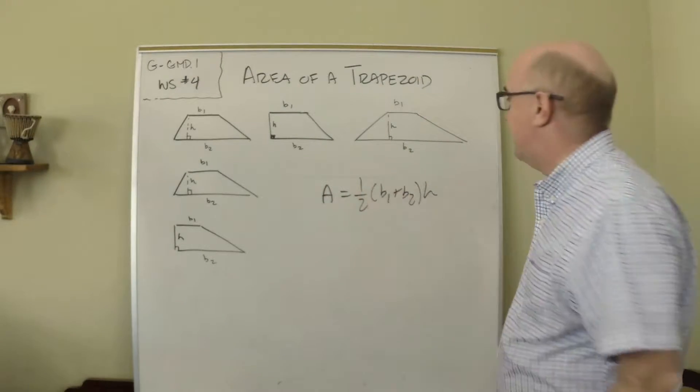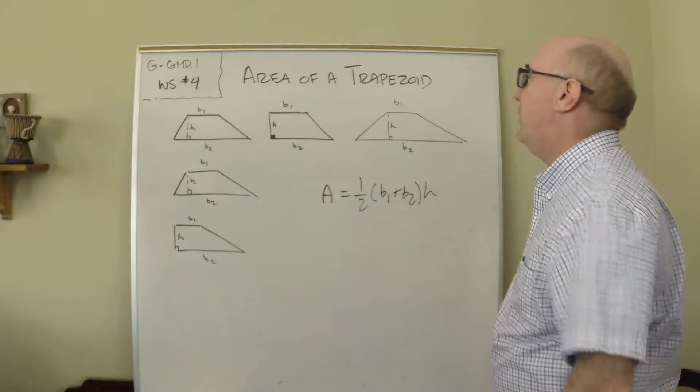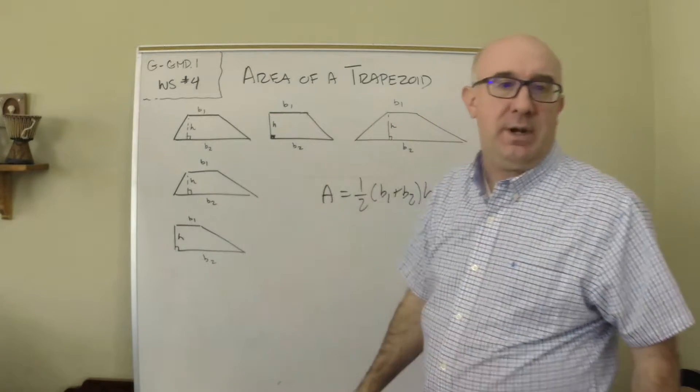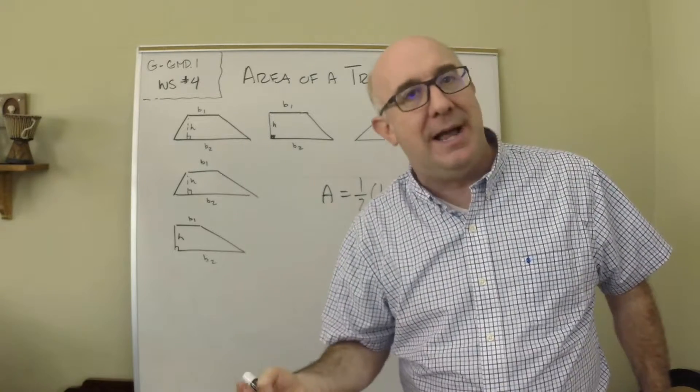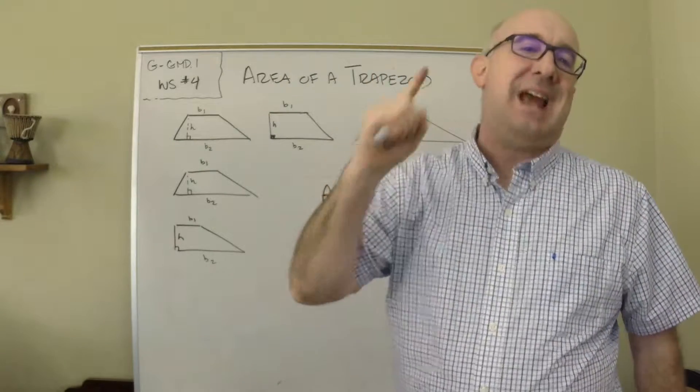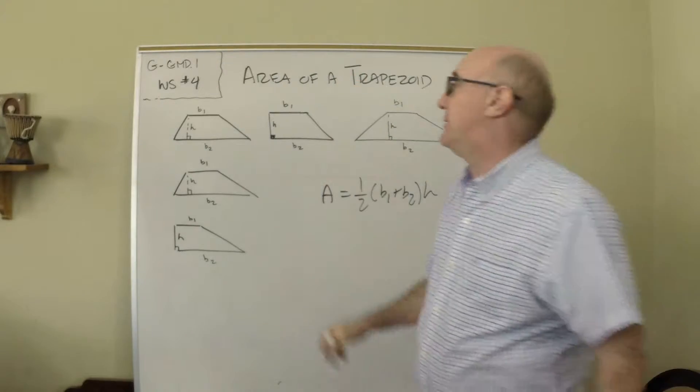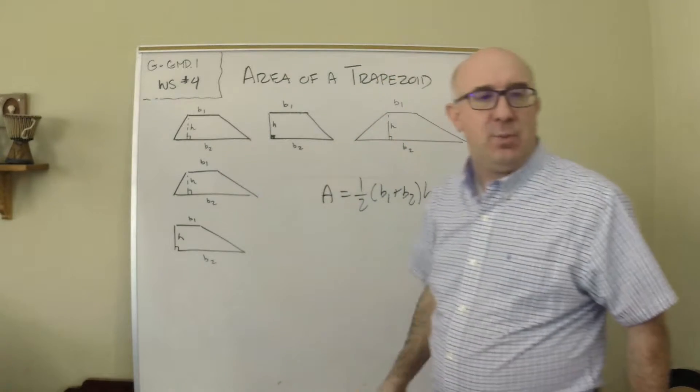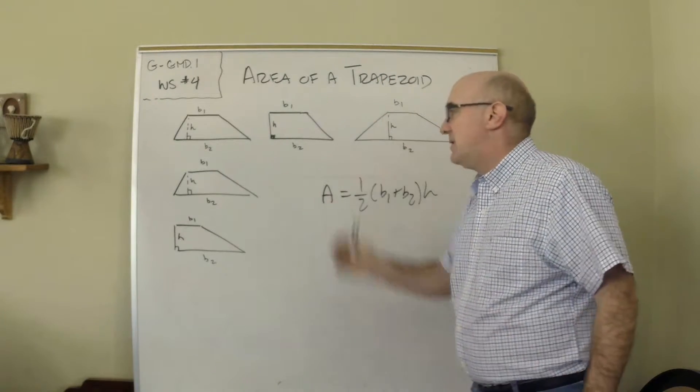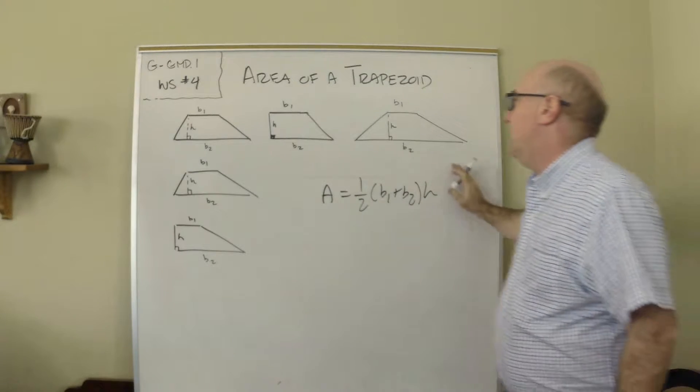This is pretty interesting, so where does this thing come from? Well, first of all, trapezoid - we got to figure out what it is. It's a polygon, a quadrilateral that has exactly one set of parallel sides. We call them base one and base two, and they come in lots of different forms and shapes.